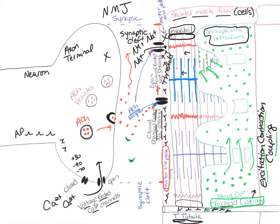Then we have the thin filaments, which are going to overlap a little bit with those thick filaments. All these red lines are the actin molecules — we call those thin filaments. The blue myosin molecules are the thick filaments. What happens is that the myosin molecules are going to grab onto those thin filaments and pull them towards the center of the sarcomere, toward the M line. That shortens the whole sarcomere — from Z line to Z line — which is what we call the contraction cycle.